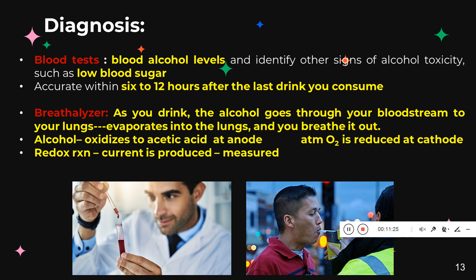Another option is breath analyzers, which police use to check if people have consumed alcohol. Breath analyzers check the alcohol content in the lungs — when you drink alcohol it moves into the blood system and reaches different organs including the lungs. In the lungs, alcohol evaporates, and as you breathe into the equipment, the alcohol content reaches the breath analyzer. It works on the principle of a redox reaction, where the alcohol content in your breath gets oxidized to acetic acid, since inside there are electrodes — anode and cathode — and oxygen is reduced at the cathode.